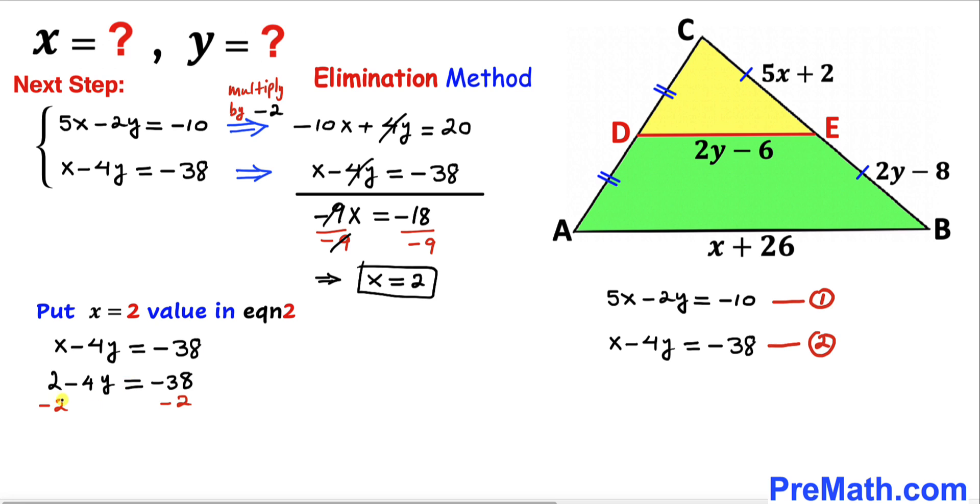Now let's subtract 2 from both sides, giving us negative 4y equals negative 40. Now divide by negative 4 on both sides. Therefore, our y value turns out to be positive 10.